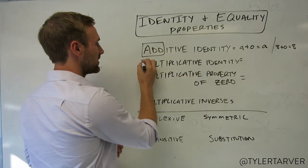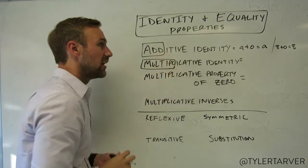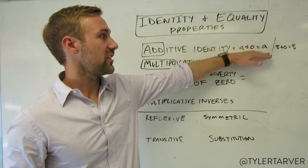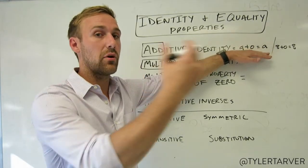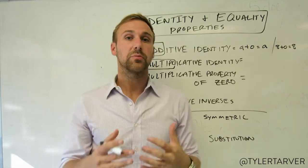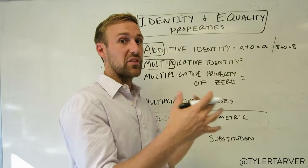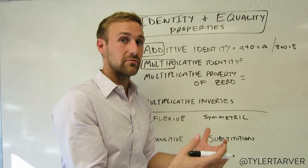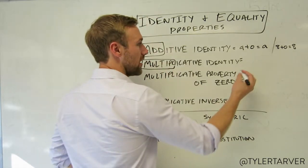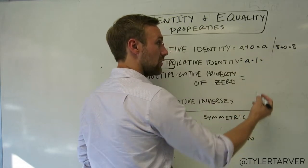Now, what's the multiplicative identity property? It sounds a lot like multiply. Based on the additive identity — where we add zero and keep the same number — what can you do with multiplication so that a number multiplied by something still equals itself? That's right: times one. So essentially, a times one is going to equal a.